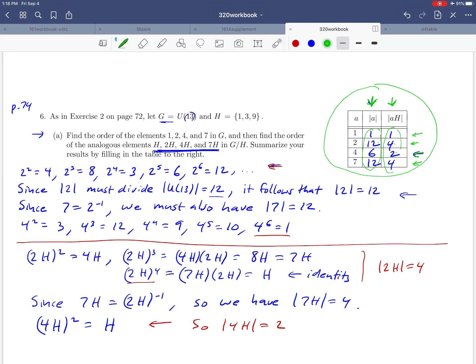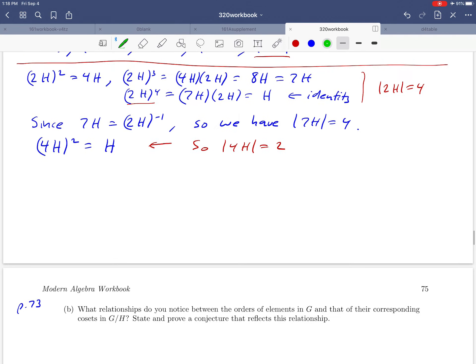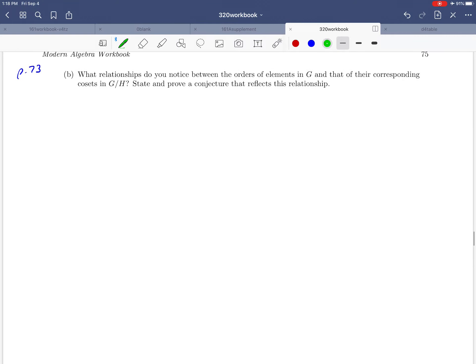So if I had to make a conjecture here, I'd probably say that it looks like the order of the coset is always a divisor of the order of the element that generates it. That turns out to be a true statement. Let's see if we can formulate that in words and then prove it.